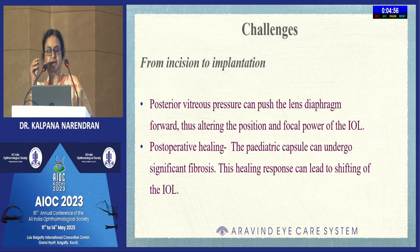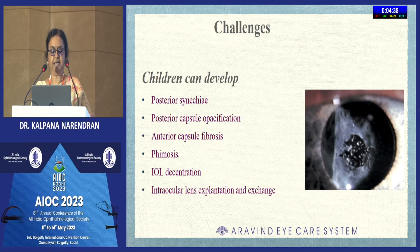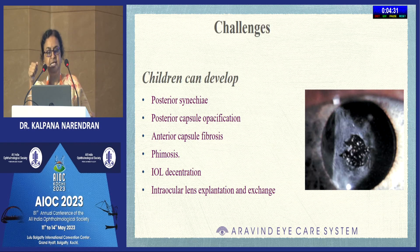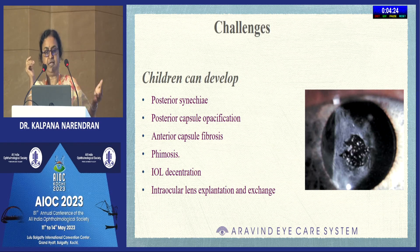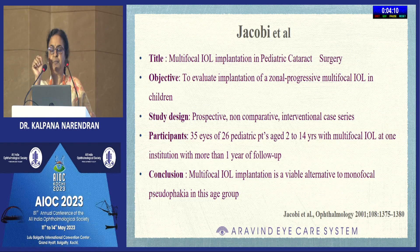Surgically, a proper incision and proper bag placement are needed for a multifocal lens. Pediatric cataract surgery is more challenging than adult surgery due to increased pressure. Post-operatively, even after excellent surgery, inflammation can cause posterior synechiae and PC opacification. In rare cases, IOL explantation or exchange may be needed, but with proper IOL selection this will not happen 90% of the time. This image shows a YAG capsulotomy being done despite previous posterior rhexis due to opacification.